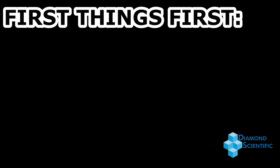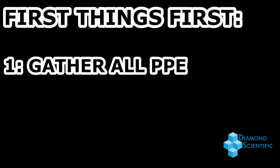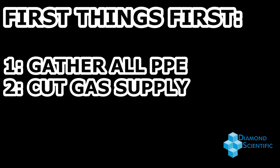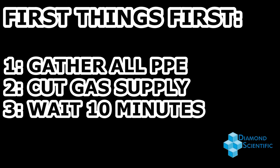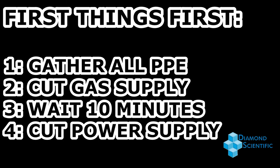First, whenever performing maintenance on the SWG-100, gather all appropriate personal protective equipment. Then you'll want to cut off the gas supply. Allow 10 minutes for a full gas purge cycle to complete before completely cutting power to the analyzer.